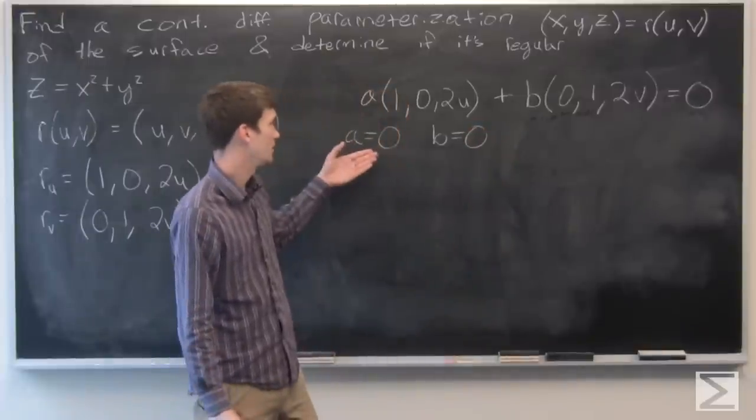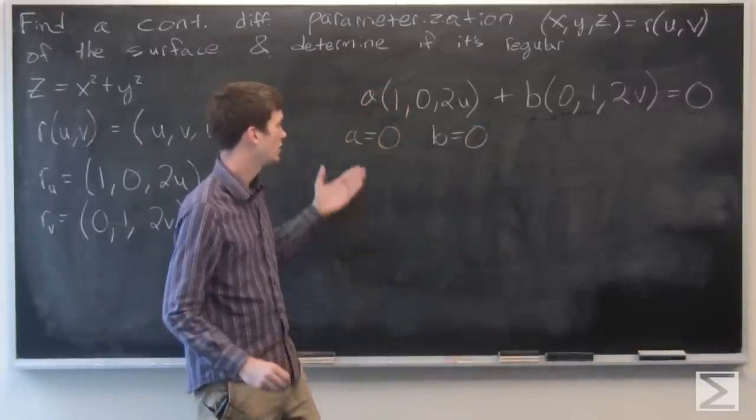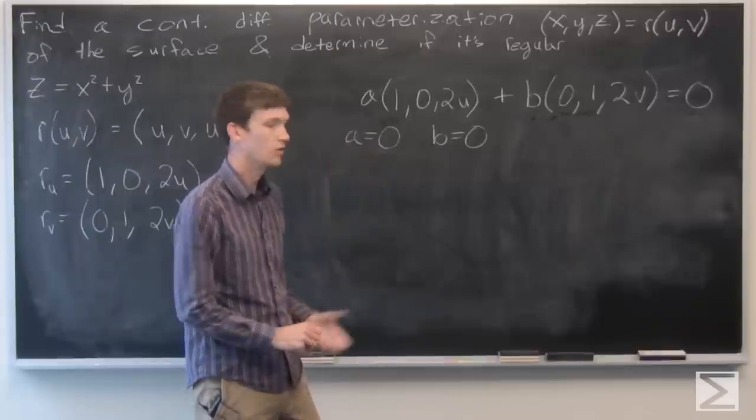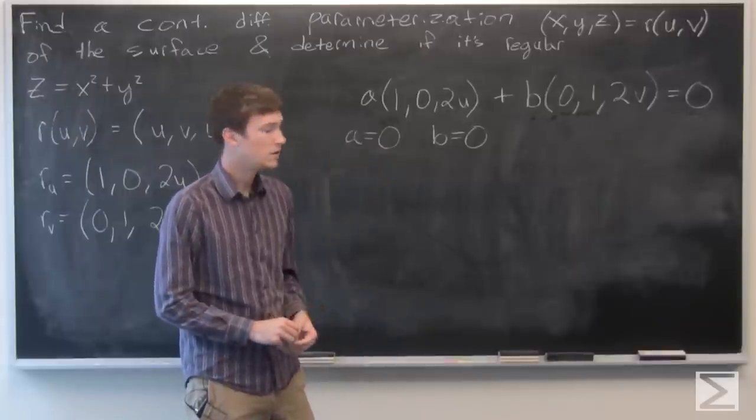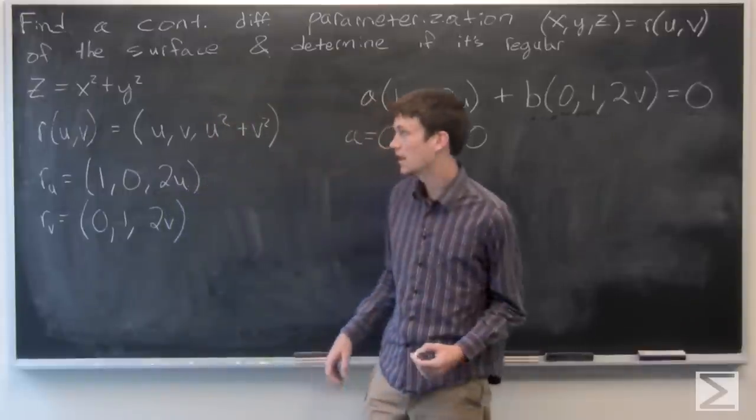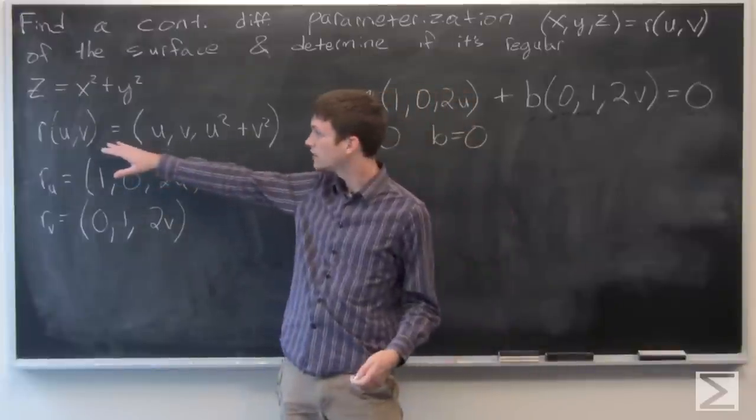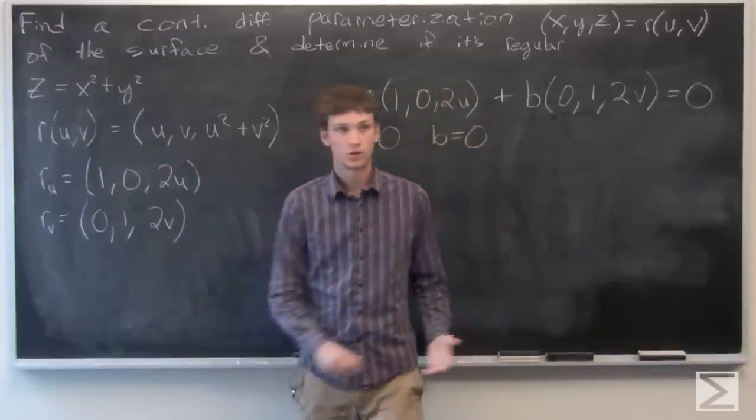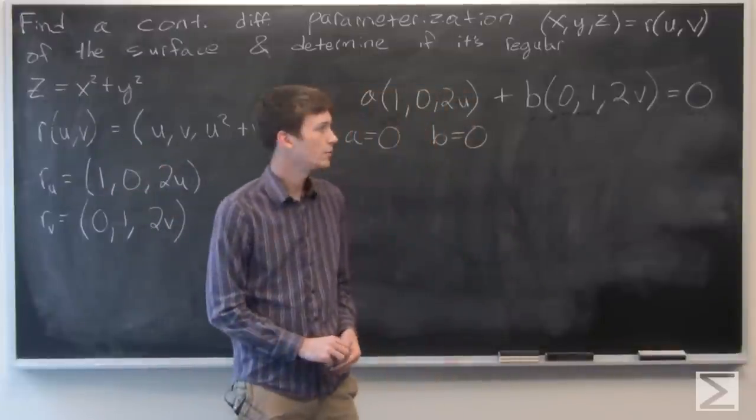Which tells us that it's local regular because a equals 0 and b equals 0. So we found a parameterization of our surface and we also determined that it's a local regular parameterization.